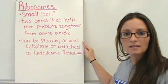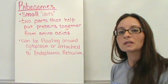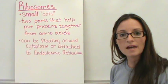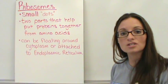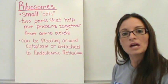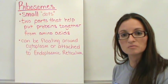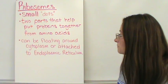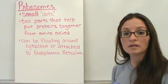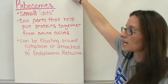Ribosomes have two different ways that they can be located within the cell. First of all, you can find them just floating around in the cytoplasm, and second, you can also find them attached to the endoplasmic reticulum. If they are attached to the endoplasmic reticulum, it will be called rough endoplasmic reticulum versus smooth. So ribosomes are really important because they help put those amino acids together into the protein chains.